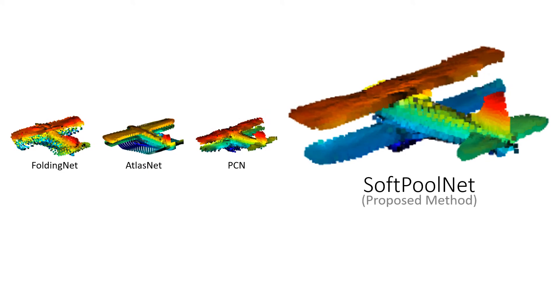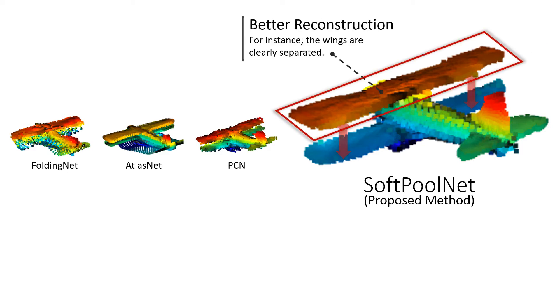With a similar goal, we propose an architecture called SoftPoolNet that significantly improves the completion. For instance, in our reconstruction, the two wings of the biplane are clearly separated.